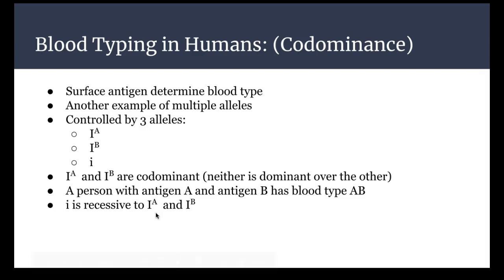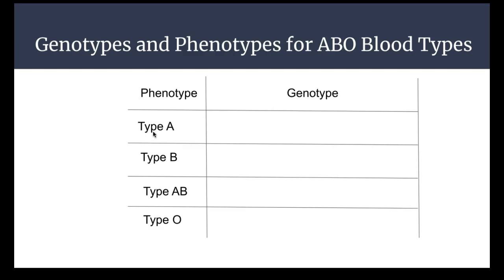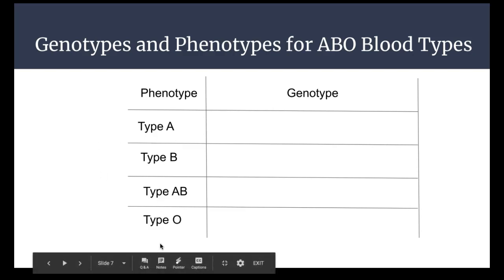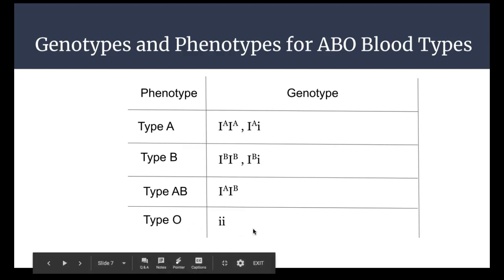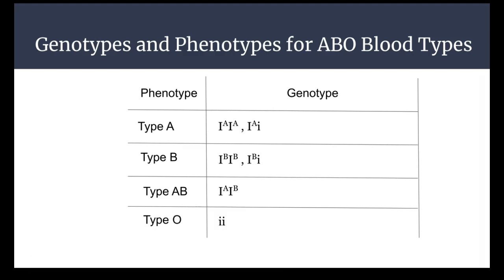So let's look at what genotypes correspond to each blood type. Type A can be capital IA/IA (homozygous) or capital IA/lowercase i (heterozygous), because capital I is dominant over lowercase. Type B follows the same pattern: IB/IB or IB/lowercase i. Type AB is capital IA/capital IB. And type O is lowercase i/lowercase i — it's the most recessive of all options compared to type A, type B, or AB.